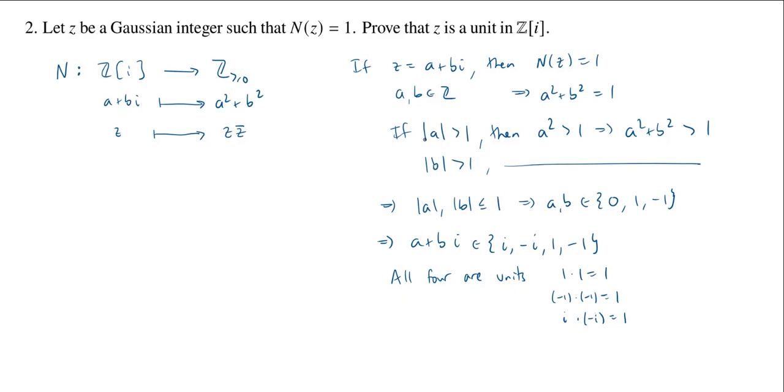Now, what if we don't write z as a plus bi? What if we use this alternate description of the norm map as just multiplying z by its conjugate? In this case, so this is proof 1. Proof 2, this is actually going to be quite short because we know that N(z), which is equal to 1, is equal to z times z bar.